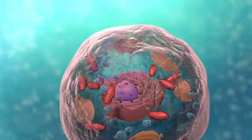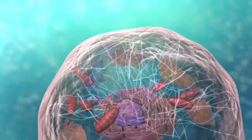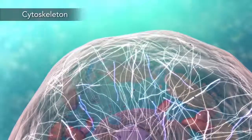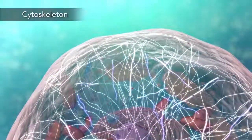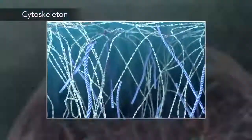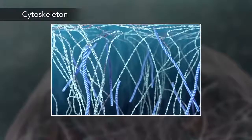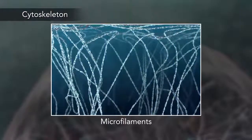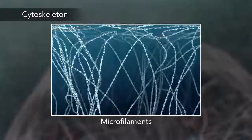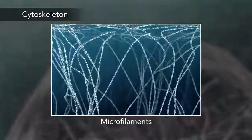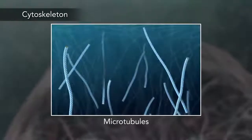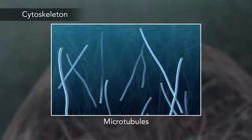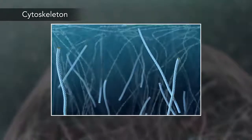Meanwhile, the cell maintains its shape through a cytoskeleton. The cytoskeleton includes the thread-like microfilaments, which are made of protein, and microtubules, which are thin, hollow tubes.